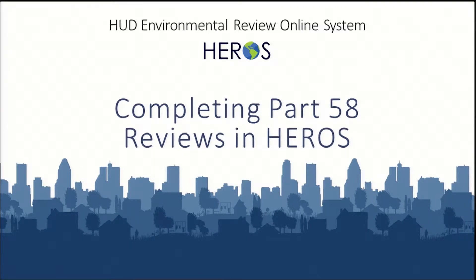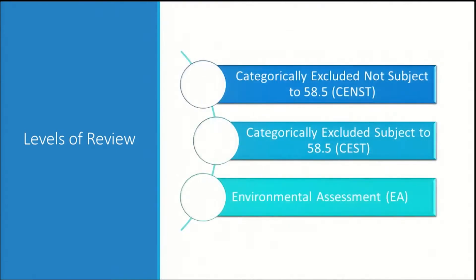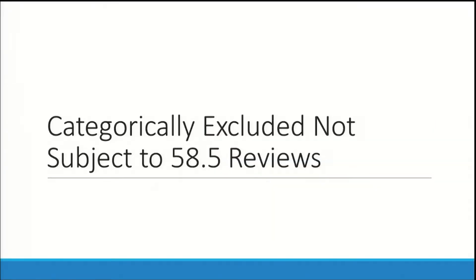Welcome to the HEROES how-to video series. This video will show you how to complete part 58 reviews in HEROES for the three most common levels of review: categorically excluded not subject to 58.5 or CENST, categorically excluded subject to 58.5 or CEST, and environmental assessments or EAs. We'll start with CENST reviews.